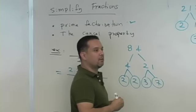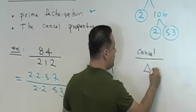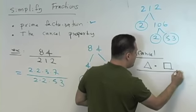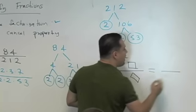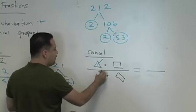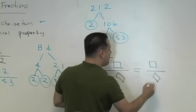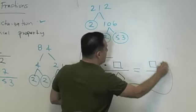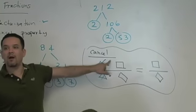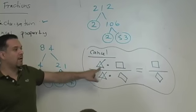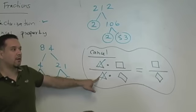Remember the cancellation principle. If you have a triangle times a square over a triangle times a diamond, what happens here? Cancel your triangles. And what's left? Square over your diamond. This is your cancellation principle. To point out some details, you do have to have multiplication here, top and bottom. And it has to be the exact same value on top and bottom in order to cancel them.